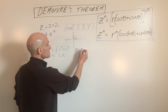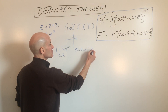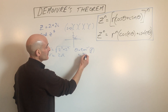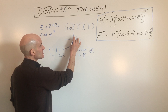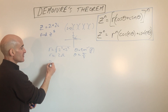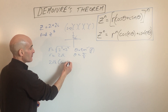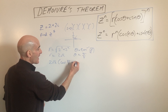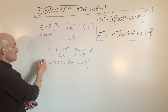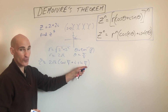Theta equals the inverse tangent of b over a, which is 2 over 2, equal to 1. Tangent equals 1 at 45 degrees, or pi over 4, and you can see this is pi over 4. So written in trigonometric form, we have 2 root 2 times the quantity cosine of pi over 4 plus i sine of pi over 4 — the same number, just in trigonometric form.